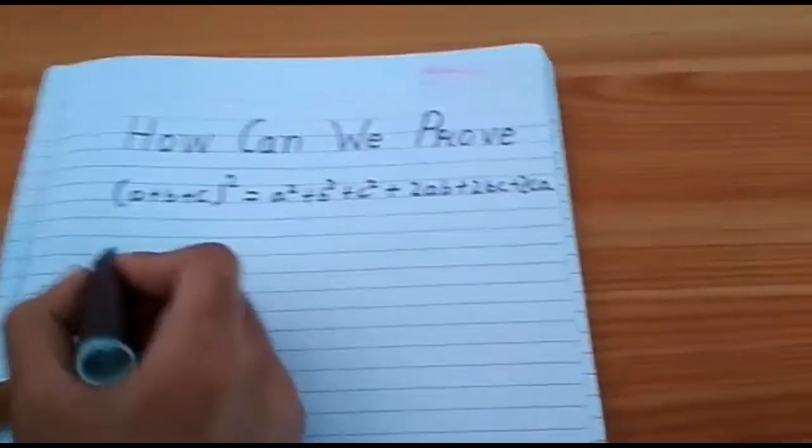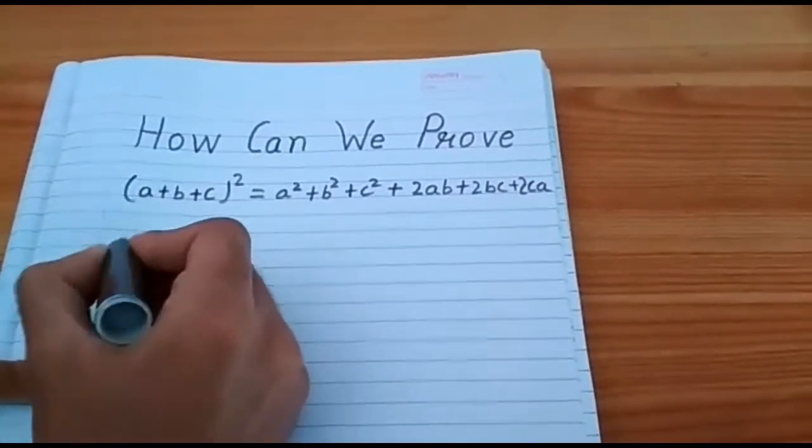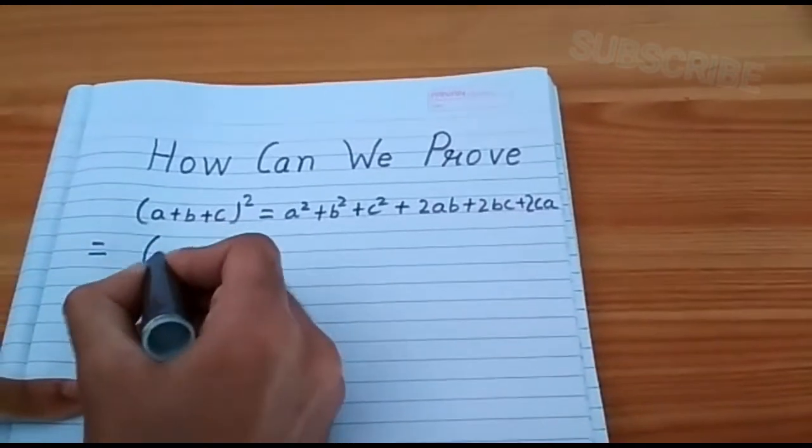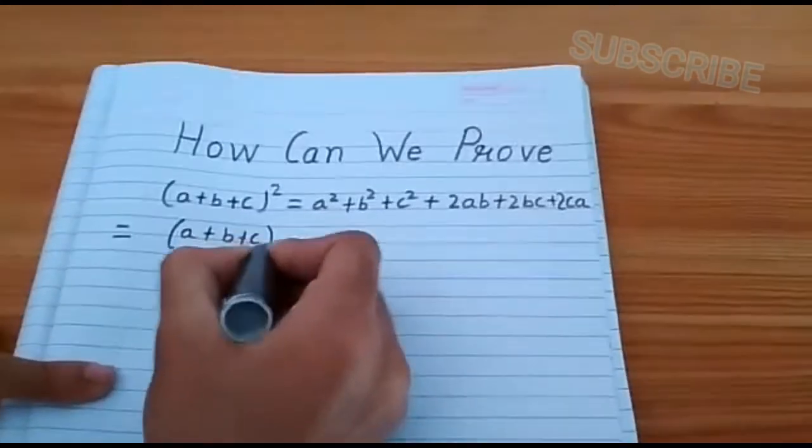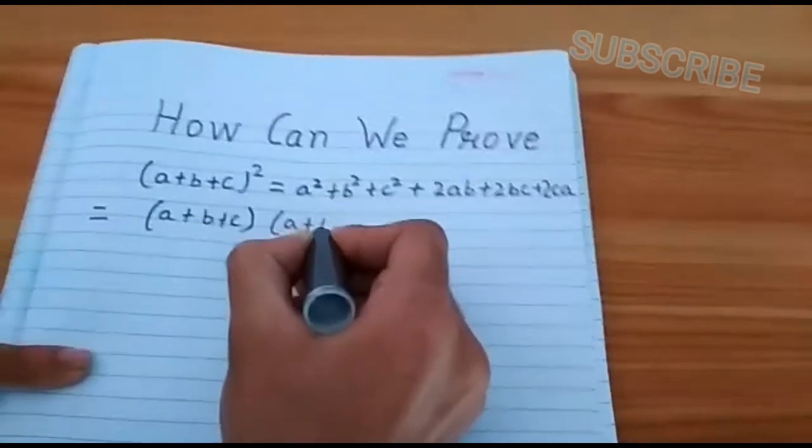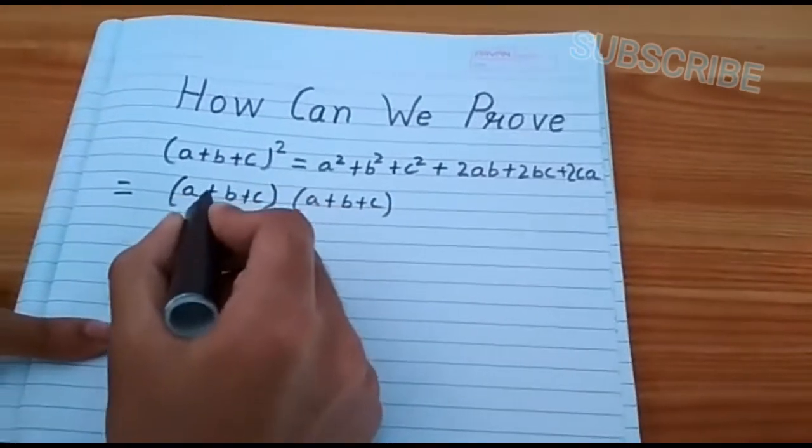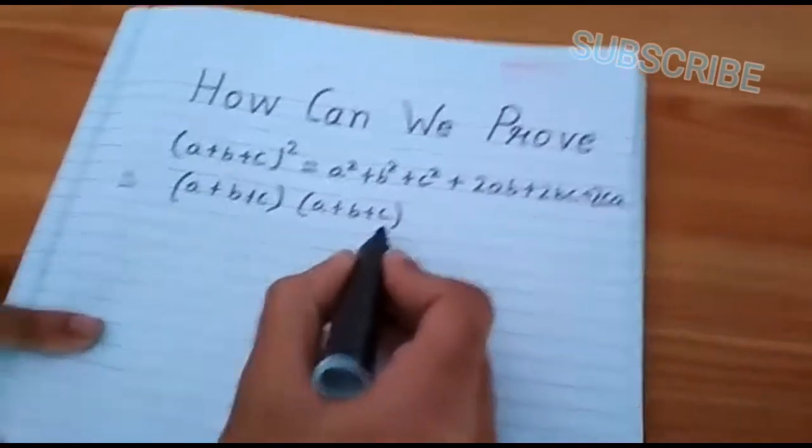First of all, what does (a+b+c)² mean? So, here it means squaring a+b+c, or multiplying (a+b+c)(a+b+c).